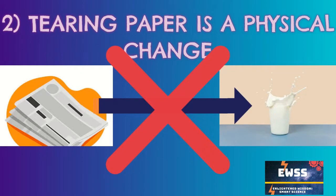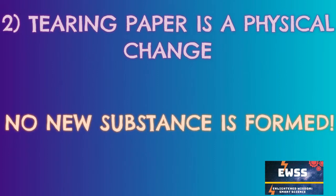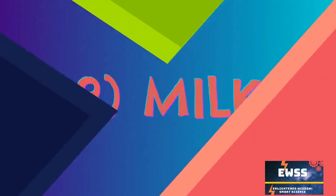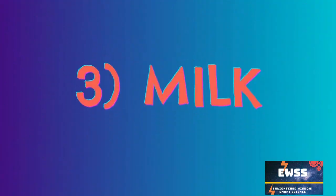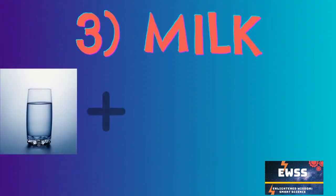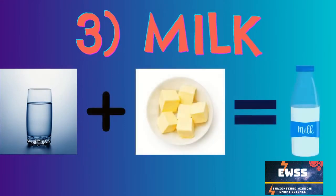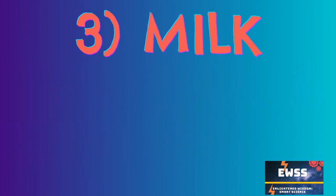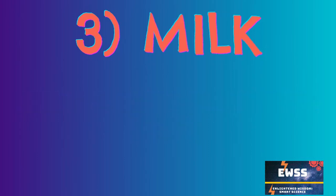So clearly, tearing a paper does not show any new substance either at the atomic or the surface level. Therefore it is a physical change. And now let's take one last example. Take water, add fat and protein globules to it. Magically, it becomes milk. So is it a chemical change? Surprisingly, no.